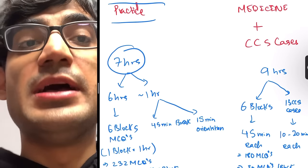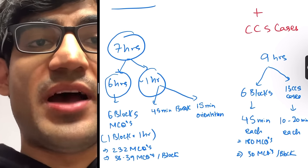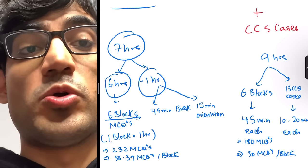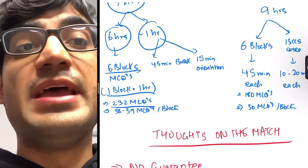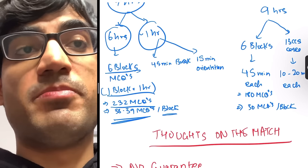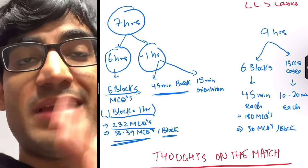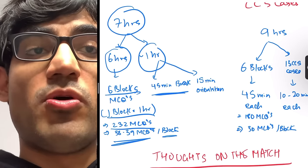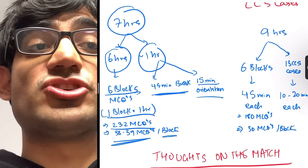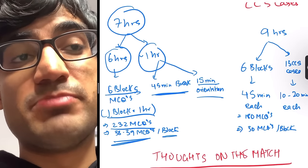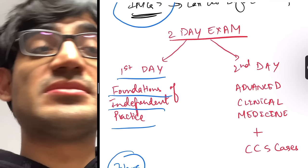Step 3 Day 1 is seven hours long, divided into six one-hour blocks with approximately 232 MCQs total, about 38-39 questions per block. There is a one-hour period including a 45-minute break and 15-minute orientation. As with Step 1 and Step 2, completing the orientation beforehand on the NBME website converts it into additional break time.